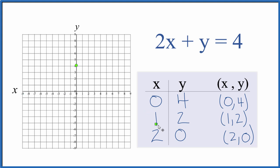Then we have 1 for x and 2 for y. 1, 2. And let's put that last point on there. 2 for x, 0 for y. There it is.